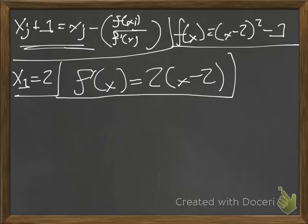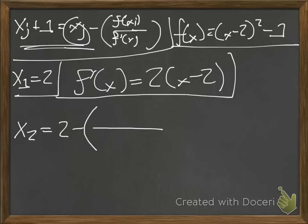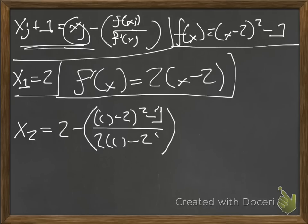Let's find x2. We know x2 = x1 − f(x1) / f'(x1). Xi here is our x1 = 2, so we plug in 2 into f(x): (2 − 2)² − 1, which is 0 − 1 = −1 on the numerator. And on the denominator, f'(2) = 2(2 − 2) = 2(0) = 0.